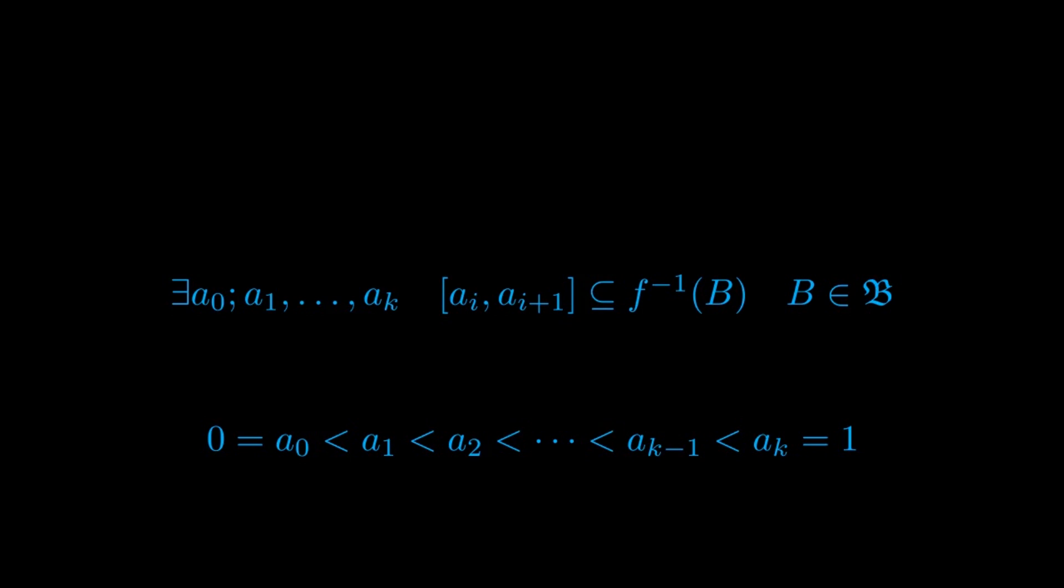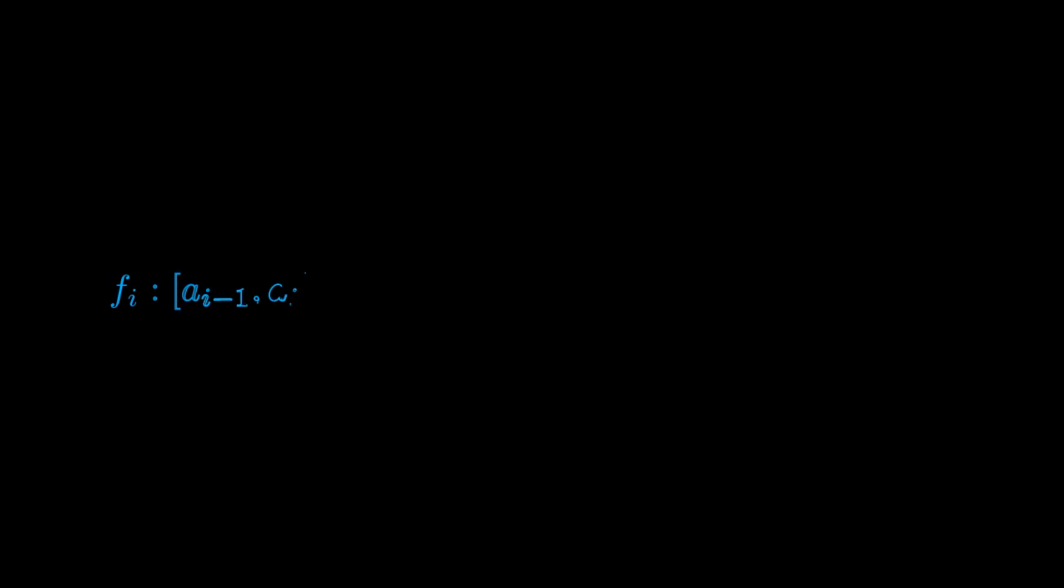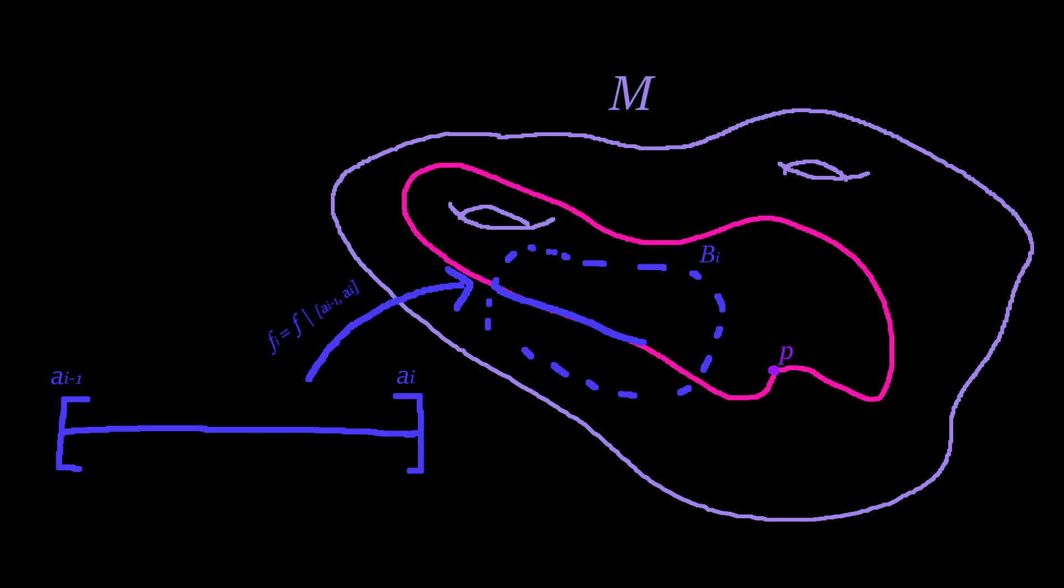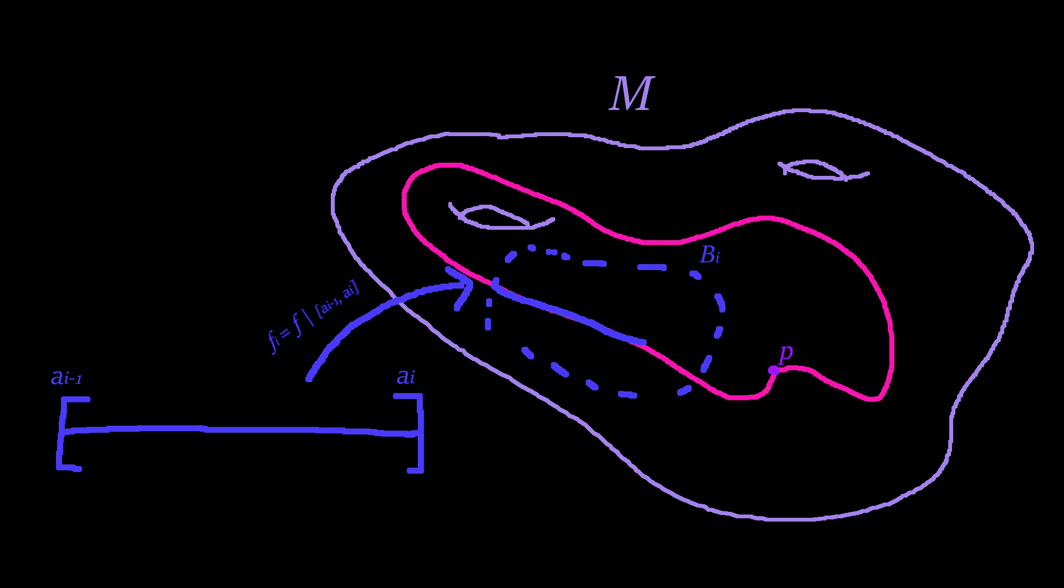We will call F_i the restriction of our path F to the compact interval [a_{i-1}, a_i], and we furthermore re-parameterize it so that the domain is the compact interval [0,1]. We call B_i the coordinate ball containing the image of each restriction F_i.